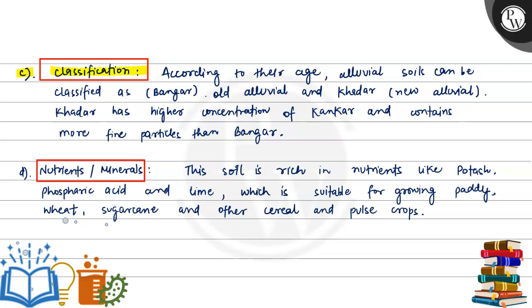The third point is classification. According to their age, alluvial soil can be classified as Bangar, that is old alluvial, and Khadar, that is new alluvial. Khadar has a higher concentration of kankar and contains more fine particles than Bangar. So the old soil is called Bangar and the new soil is called Khadar.